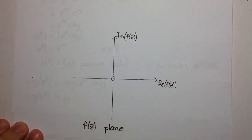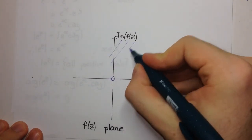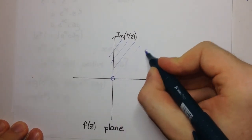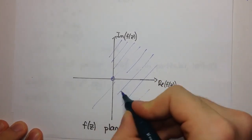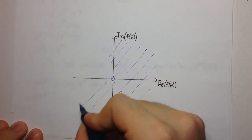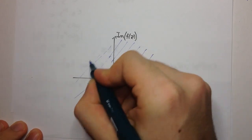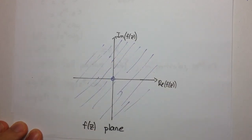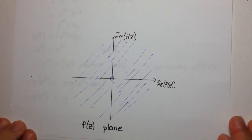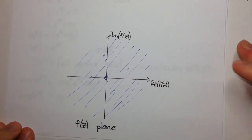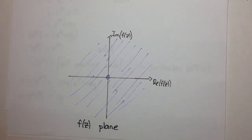At the origin we put a little circle to indicate it is not included, and we shade the entire plane. That's one example of sketching a complex function, which you might also think of as a complex mapping. Thanks for watching.